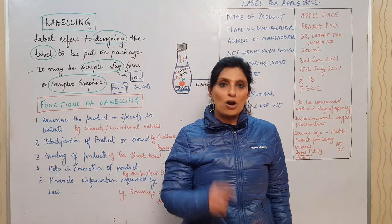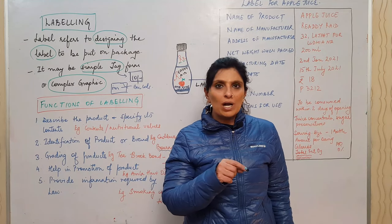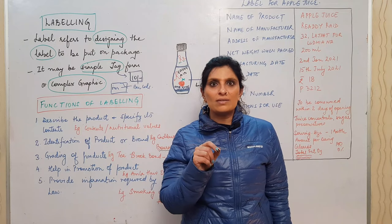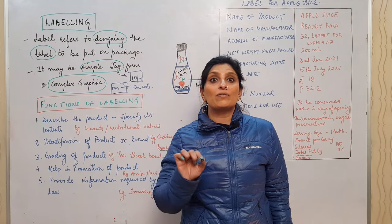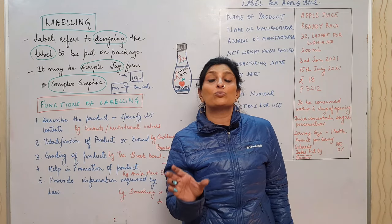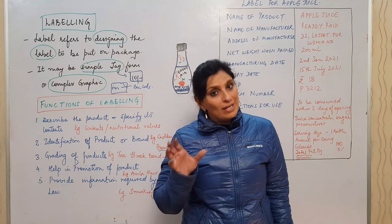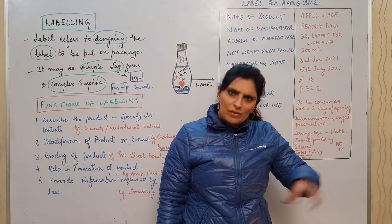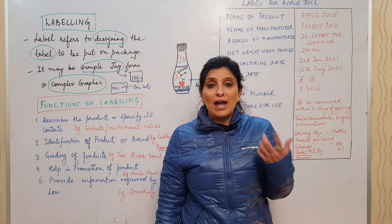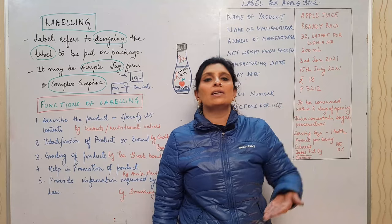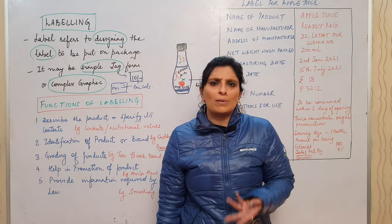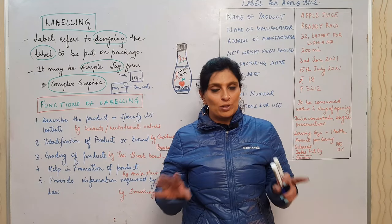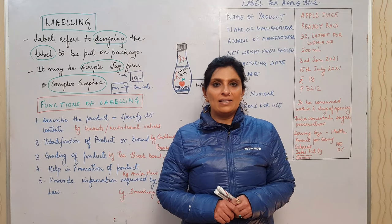Labels also provide information required by law. For example, 'Cigarette smoking is injurious to health' is a mandatory statutory warning — without it the product cannot be sold. Similarly, infant milk products like Lactogen must carry the statutory warning that 'Mother's milk is best for the child.' Labels thus fulfill legal obligations. Consumers also check MRP and contents on labels before buying. I hope you've enjoyed this discussion on product-related decisions. Next, we'll cover price and its related concepts.